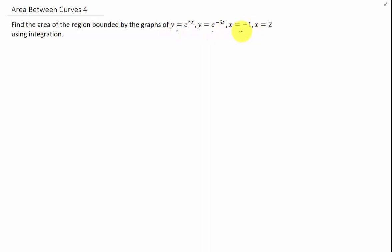We again need to find the area between a bunch of given relations. It's good to have a basic idea of what these functions look like. It doesn't have to be all that precise. But the function e to the 4x basically looks like this.